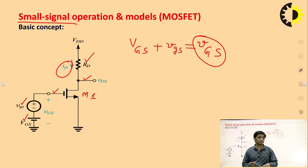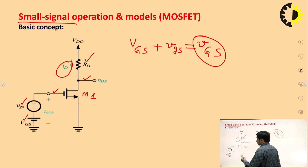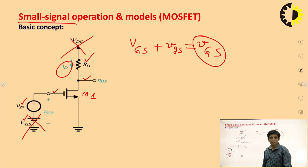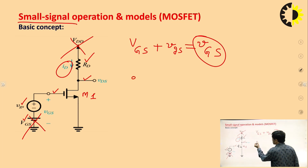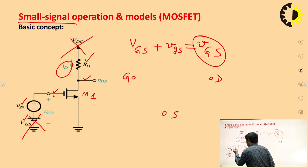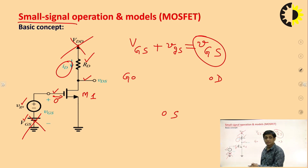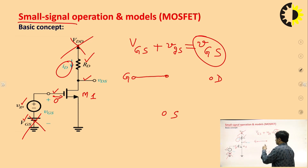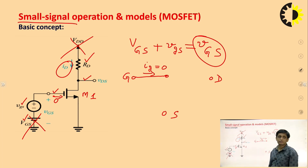With the help of small signal analysis, the model we draw is called the small signal model. If we remove all DC sources, capital VGS will be removed and VDD (the supply voltage) will also be removed — meaning the voltage source will be short-circuited. The circuit then has gate, drain, and source terminals. We know that for the MOSFET, the gate current is zero because the input impedance is very high due to the insulator in the MOSFET. Since IG = 0, it is an open circuit between gate and source.